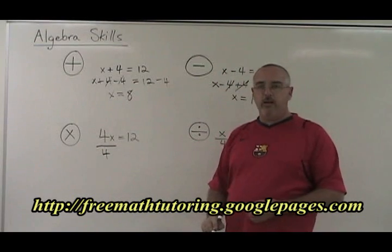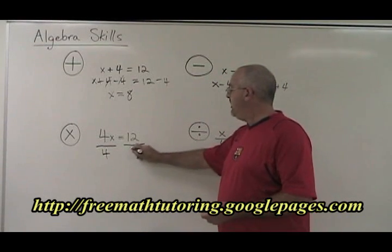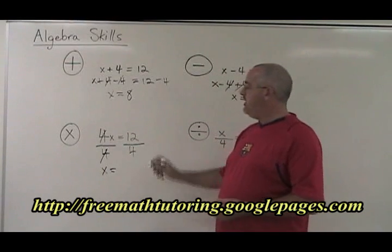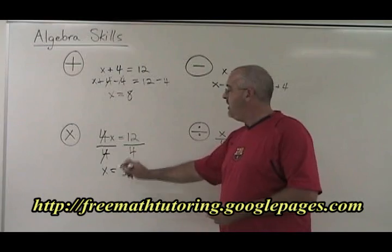If we're going to divide the left side of the equation by 4, we must divide the right side by 4. The 4s cancel. Our x is isolated, which is what we wanted, and 12 divided by 4 is 3. We have our answer.